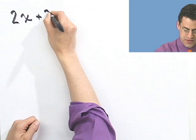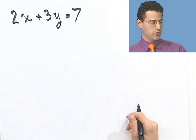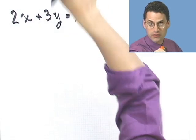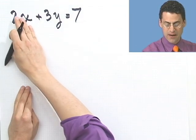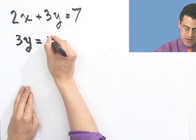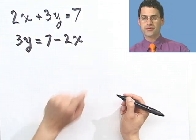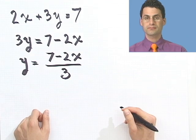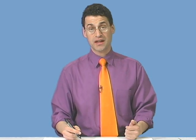Suppose we have 2x plus 3y equals 7. The question is, is this a function of x? That means: can I take this formula and convert it into a machine where I input x and it spits out one value of y? The trick is to solve for y. I'll bring the 2x to the other side by subtracting from both sides, so I see 3y equals 7 minus 2x. Dividing through by 3, I get y equals (7 minus 2x) divided by 3.